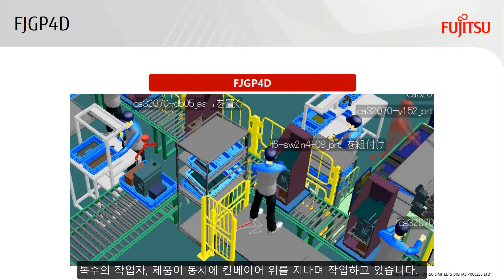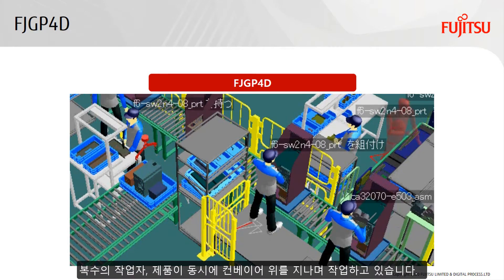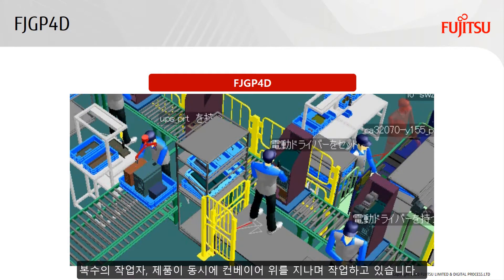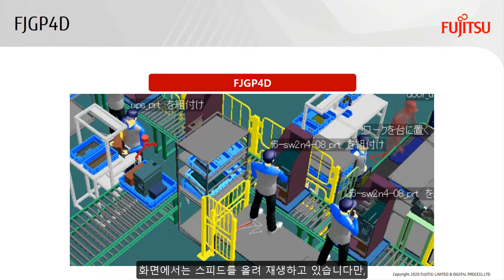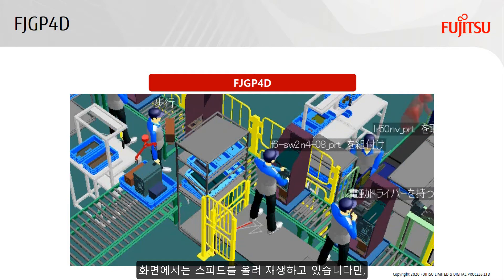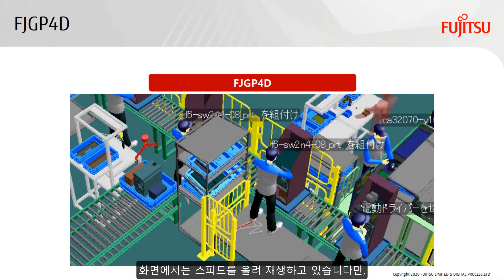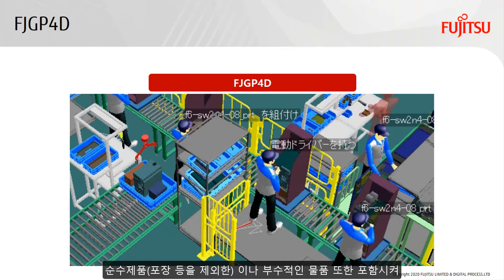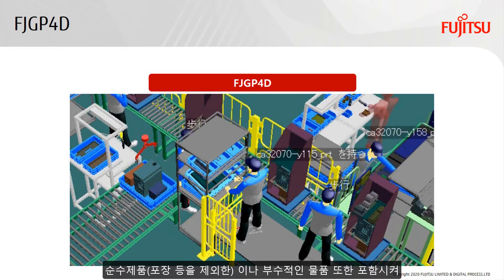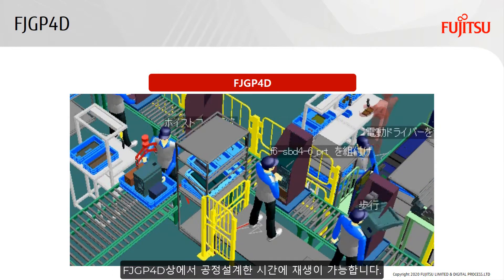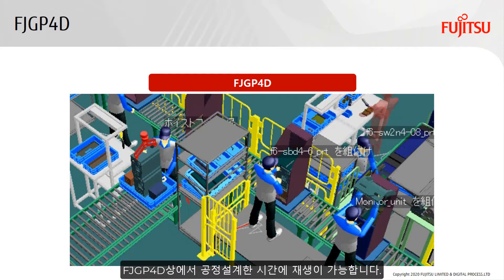Multiple products are flowing on the conveyor at the same time, and multiple workers are operating. It can be played back according to the operation time designed by FJGP4D, or it can be played back at a higher speed.